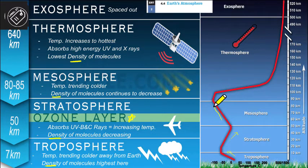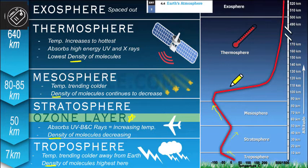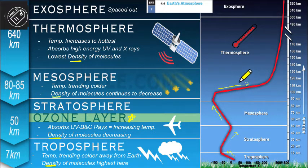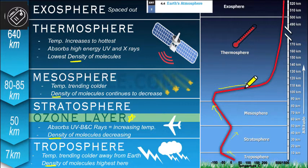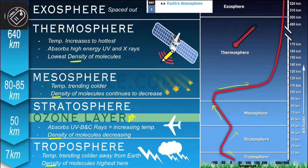In the mesosphere we get another temperature decrease, and the density of molecules continues to decrease. In the thermosphere, we have the highest energy per molecule — very low density of molecules, but when those molecules are excited they move and heat more quickly, causing a rapid increase in temperature. We absorb high amounts of UV and X-rays there, causing molecules to vibrate quite a bit — that's why we see temperature skyrocketing. So the trend is: increasing, decreasing, increasing, decreasing, increasing for temperature, and decreasing all the way through for density.